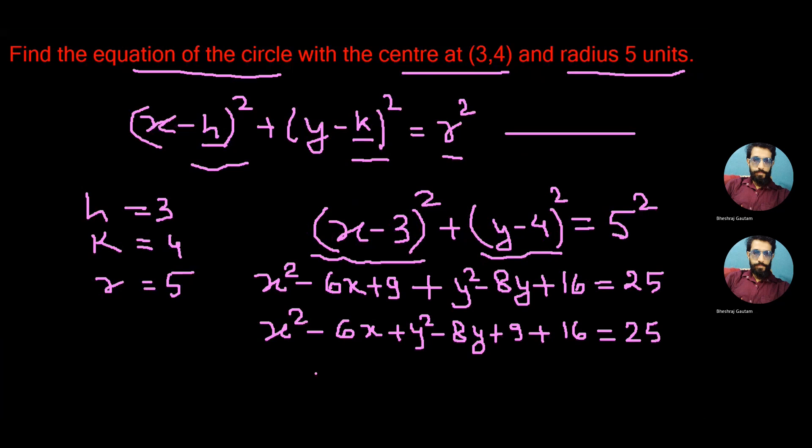Further simplifying the equation, we get x² plus y² minus 6x minus 8y and this 9 plus 16 will become 25. Let's take 25 from the right side to the left side. That will be minus 25 changing its sign is equal to 0.